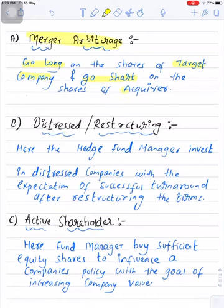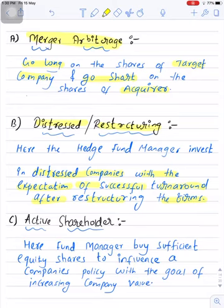The next subcategory is distressed/restructuring. Here, the fund manager invests in distressed companies with the expectation of a successful turnaround after restructuring the firm. When a security is distressed, the stock price generally trades at a deep discount valuation. If the hedge fund manager believes that restructuring will improve the prospects of the distressed company, the fund manager takes a long position in those companies.